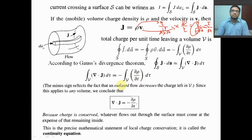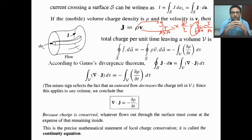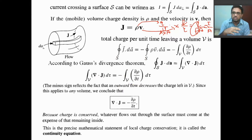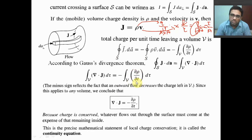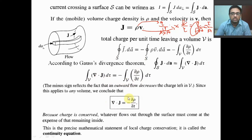What does this signify? The minus sign actually reflects that due to the outflow of charge, the remaining charge is decreasing inside the volume. Charge is flowing out, so the rest of the charge will be decreasing with time. This is the rate of change of charge density — charge is flowing out. For any volume we can write del·J = −∂ρ/∂t. Basically, charge is conserved — this is the continuity equation, and it tells that charge is always conserved.